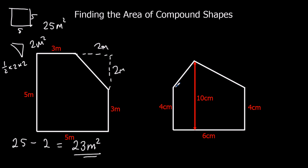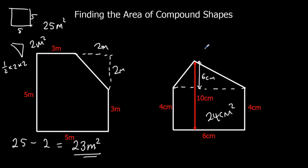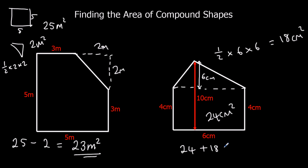Here we've got a rectangle with a triangle on top. 4 times 6 is the rectangle, and 4 times 6 is 24 centimeters squared. The height of this triangle has got to be 10 take away 4, so 6. The height is 6: we've got 4 up to there and 10 the whole way, so another 6. The area of the triangle is half times the base — the base is 6 — times the height, which is also 6. Half times 6 is 3, and 3 times 6 is 18. So we've got 24 plus 18, and that's 42 centimeters squared.